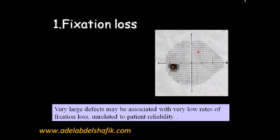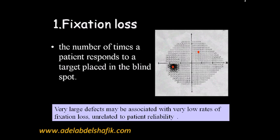Sometimes, if there is a pathology leading to a quite large blind spot, this check cannot be fully accurate because the patient may move his eye and still not see the stimulus. So fixation losses means the number of times a patient responds to a target placed in the blind spot.